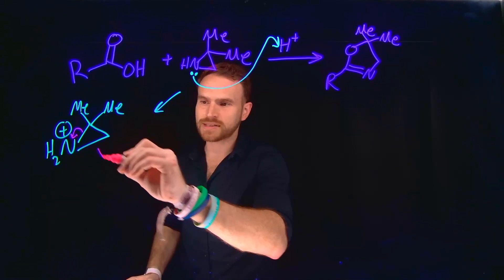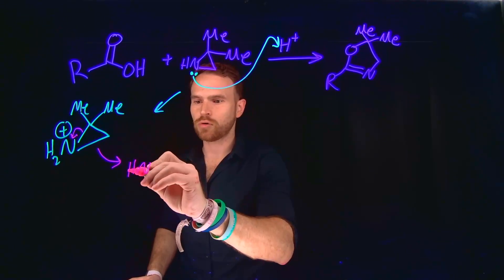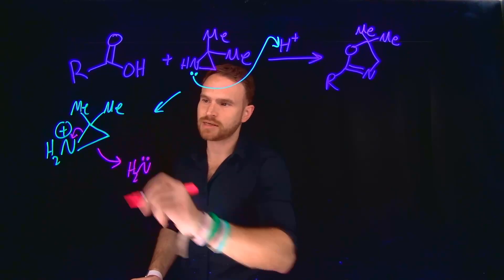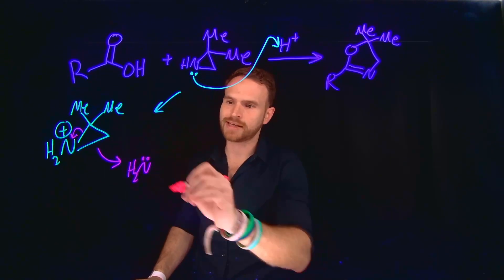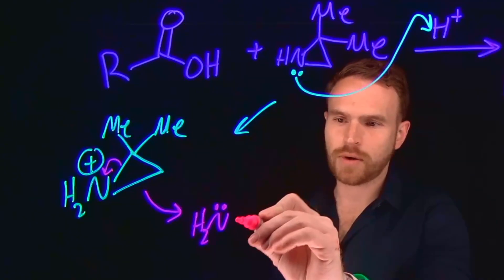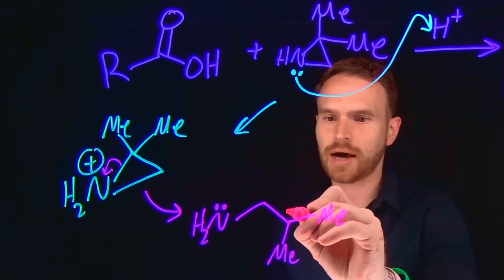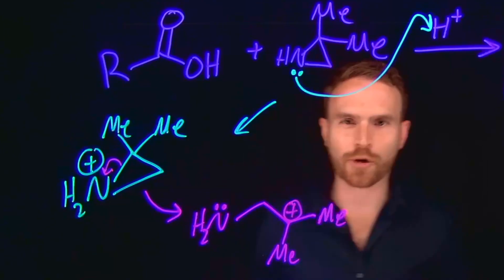So once this opens up, what we're left with is going to be a neutral amine at this position, where now those electrons that were previously in this carbon to nitrogen bond are located as a lone pair on nitrogen. And then you have the rest of your chain, where you have these two methyl groups, which are helping to stabilize this carbocation through hyperconjugation.